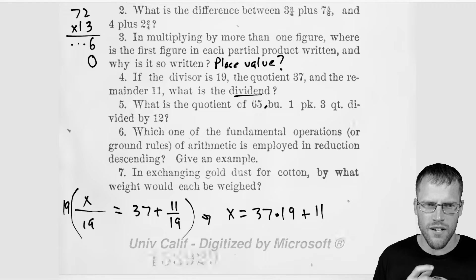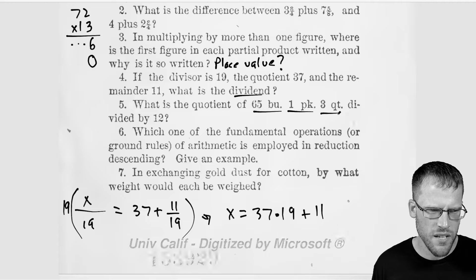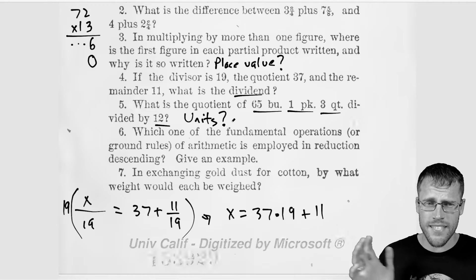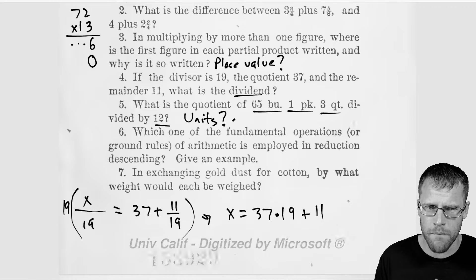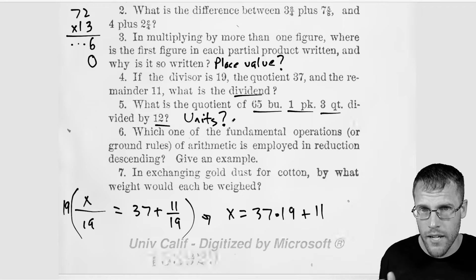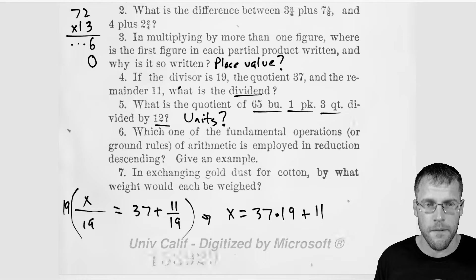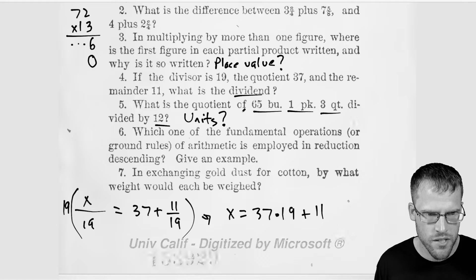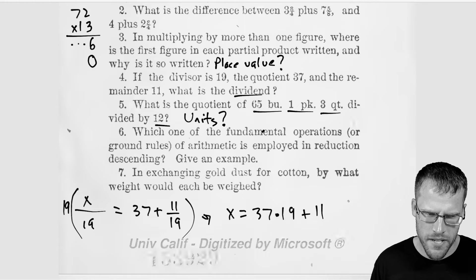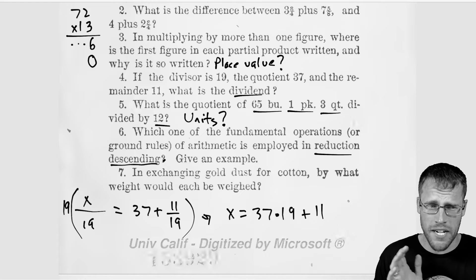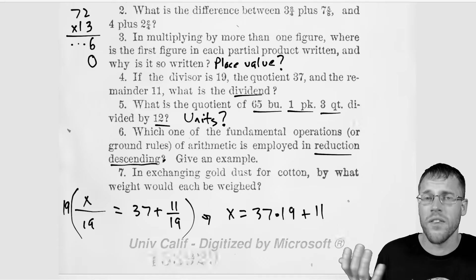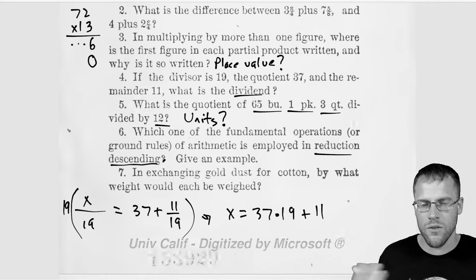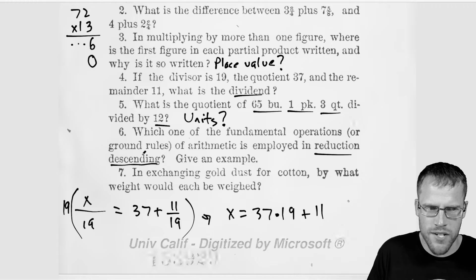Moving on to question five here. What is the quotient of 65 BU, 1 PK, 3 maybe quarts divided by 12? So here I'm just thinking units. Like what are these units? I have no idea. Maybe they'll be nice and give you a conversion chart back then, but probably not. But today, this is interesting because this is the kind of question that you get asked today on an algebra regents, at least in New York. But this is something that held the test of time, but I just have no idea what these units are because it is the 1800s. And I'm sure a lot of stuff from the 1800s just became obsolete. So question six, which one of the fundamental operations or ground rules of arithmetic is employed in reduction descending? Yeah, I'm looking at that reduction descending. I just have no idea what that means. So I would just have to learn that. Like what is reduction descending?